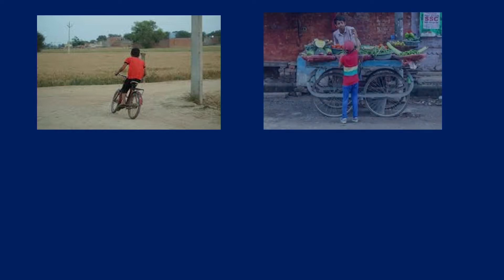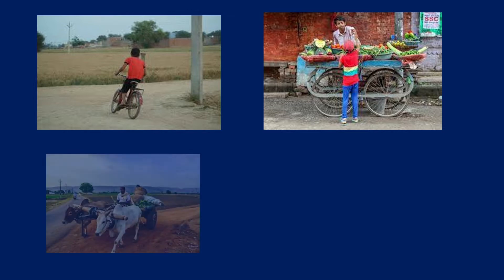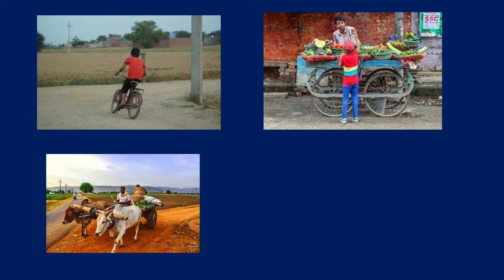Have you seen the boy in the picture? He is playing with a bicycle. Now look at this picture — what is this man selling? He is selling vegetables. He used a pull cart to sell the vegetables in the streets. Now look at this picture — it is a bullock cart. The main source to drag this bullock cart is bulls.